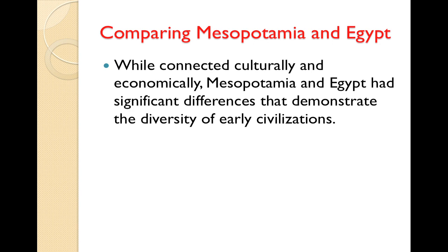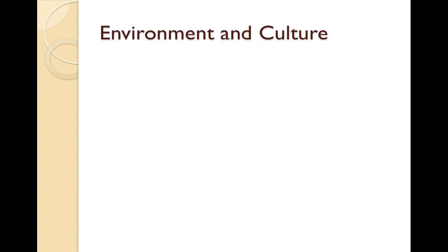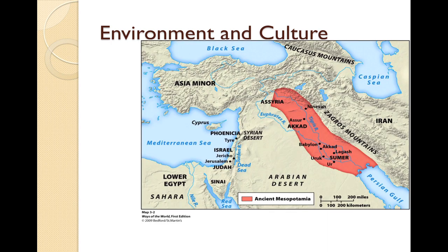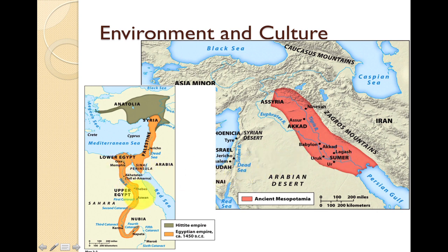The last section compares Mesopotamia and Egypt. While connected culturally and economically, they had significant differences that demonstrate the diversity of early civilizations. Both societies depended on rivers for life — the Tigris and Euphrates for Mesopotamia, and the Nile for Egypt. The Nile reliably flooded each year, providing a reliable source of irrigation and contributing to a generally more positive outlook and stable political situation. In Mesopotamia, extensive irrigation led to salinization of the soil and a weakening of the state due to lower agricultural production, demonstrating connections between the environment and political stability.